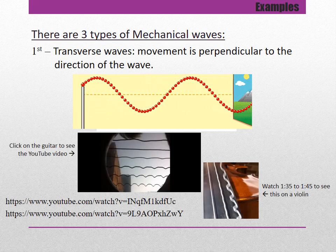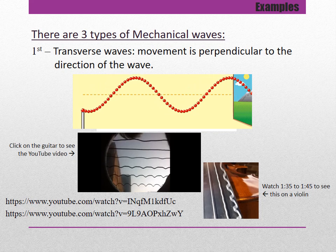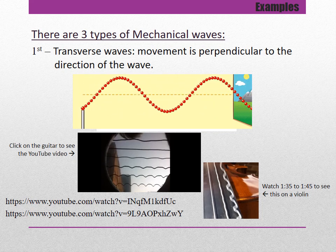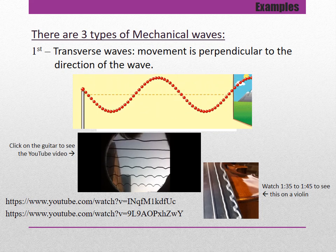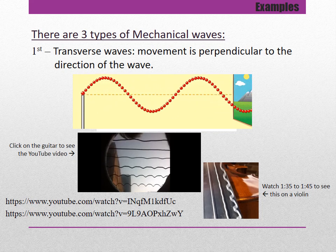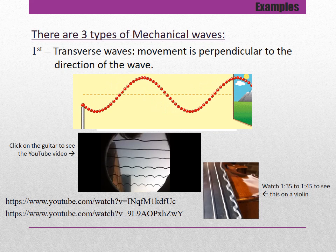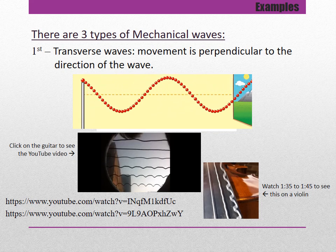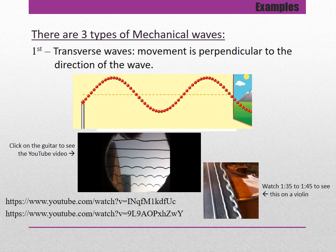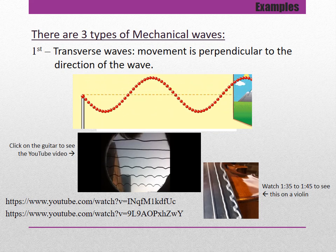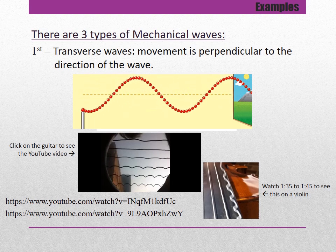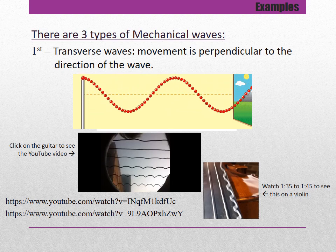A transverse wave has movement perpendicular to the direction of the wave. In the graphic you can see the waves are traveling to the right, but the individual particles are only going up and down — perpendicular movement to the direction the wave is traveling.